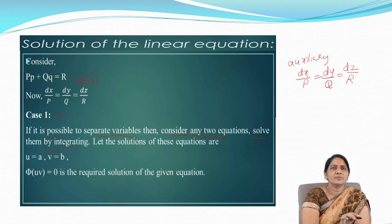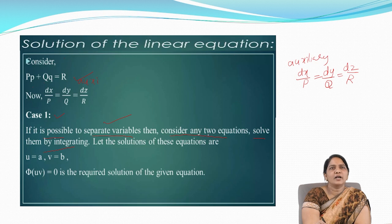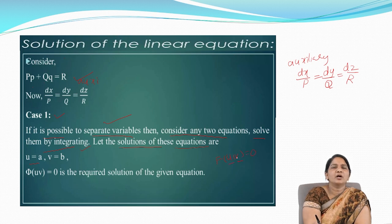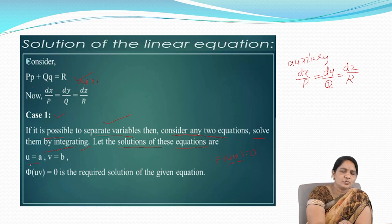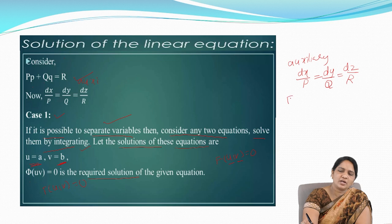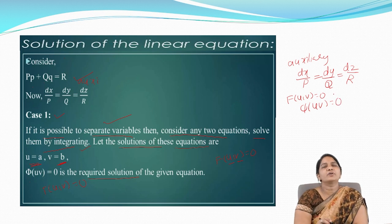If there is a possibility to separate the variables, we can consider any two equations and solve them by integrating. Let the solutions of these equations be u and v. The equation form is f(u, v) = 0, where u and v are independent solutions — u = a and v = b. So we can write this as φ(u, v) = 0. This is the required solution.